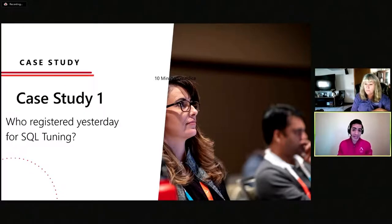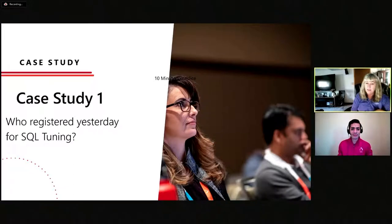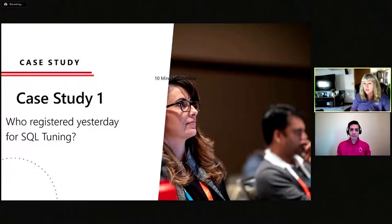Another question: what would be the best way to get index seeks on non-equality joins? The only way I could think of is doing a greater-than or less-than query on the index column. That's the only thing I can come up with right now.